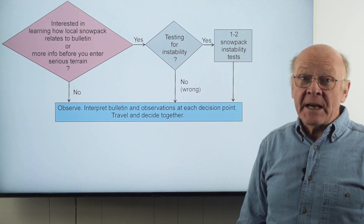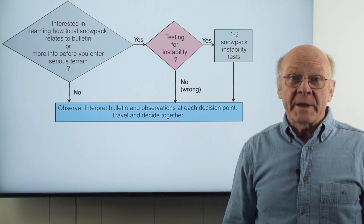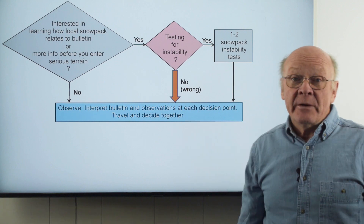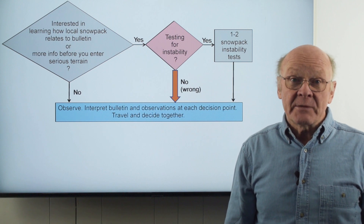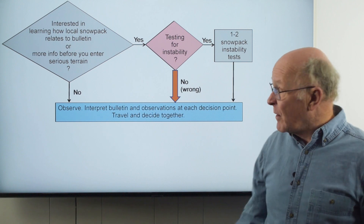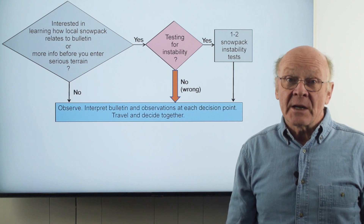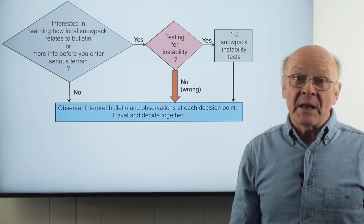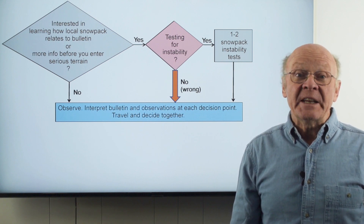So your group has decided to dig, either because you want to learn how the local snowpack relates to the bulletin or because you're approaching a serious slope along your route. Here's the kicker: in the context of recreational decisions, snowpack tests are poor indicators of stability. If you think a particular result from an instability test will tell you the slope is stable, forget it. Snowpack tests sometimes give false indications of stability and the consequence can be your life. If the test indicates instability, then you should avoid nearby serious avalanche slopes. This may mean turning around or switching to the more cautious route in your trip plan. An instability test should never convince you an avalanche slope is stable.